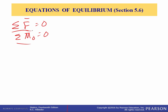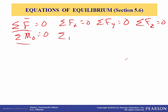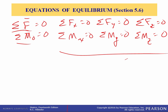The scalar forms are the ones we typically use. If all external forces and couple moments can be expressed in Cartesian vector form, then: summation of forces in x equals zero, summation of forces in y equals zero, summation of forces in z equals zero, summation of moments about the x-axis equals zero, summation of moments about the y-axis equals zero, and summation of moments about the z-axis equals zero. These six scalar equilibrium equations may be used to solve for at most six unknowns shown in the free body diagram.